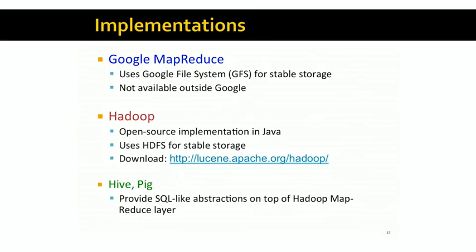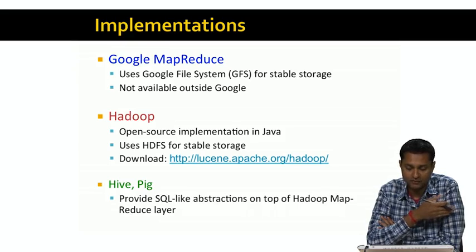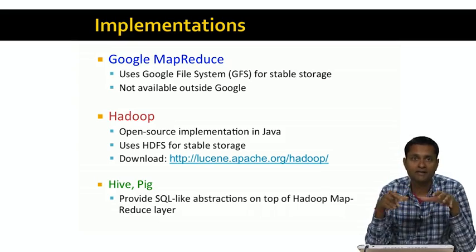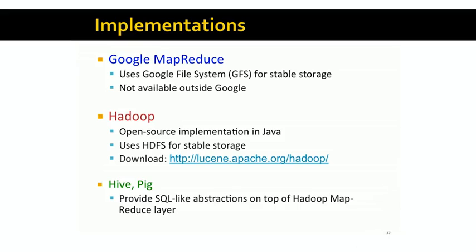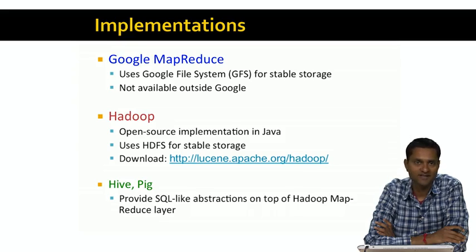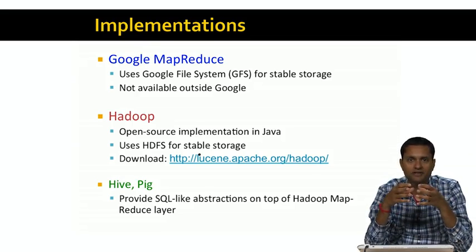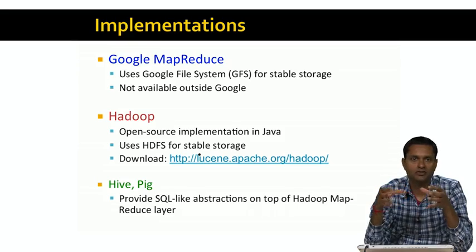The initial implementation of MapReduce was done at Google. Google first implemented a file system called the Google File System, a distributed file system that provides stable storage on top of its cluster, and then implemented the MapReduce framework on top of that. Google's implementation of MapReduce is not available outside of Google. Hadoop is an open source project that is a re-implementation of Google's MapReduce. It uses a file system called HDFS for stable storage and is implemented in Java. Hadoop is an Apache project and you can freely download it from the Apache website. Many use cases of Hadoop involve SQL-like manipulations on data, so there are open source implementations called Hive and Pig that provide SQL-like abstractions on top of the Hadoop MapReduce layer, so you don't have to rewrite those as map and reduce functions.